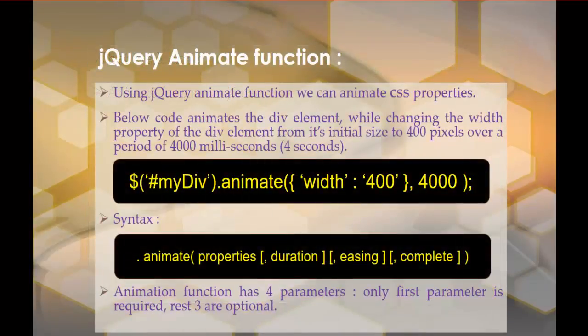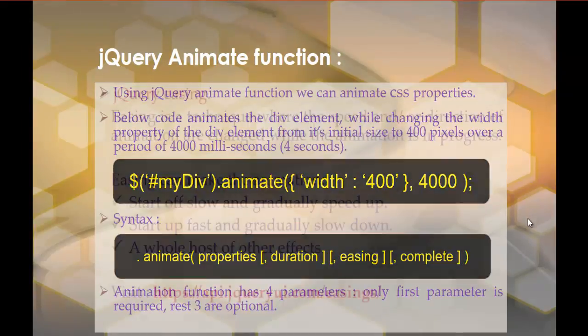In the last session, we learned how to animate the div element by increasing the width of the div by 400 pixels, and that animation happened within a span of 4000 milliseconds. We made use of two parameters: properties and duration. But we did not work on easing and complete in the last session. So in this session, our objective is to learn the parameters easing and complete. The animation function has four parameters — only the first parameter is required and the rest three are optional.